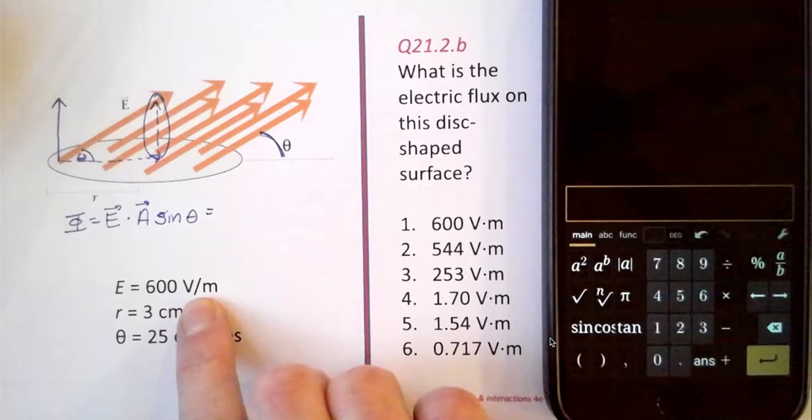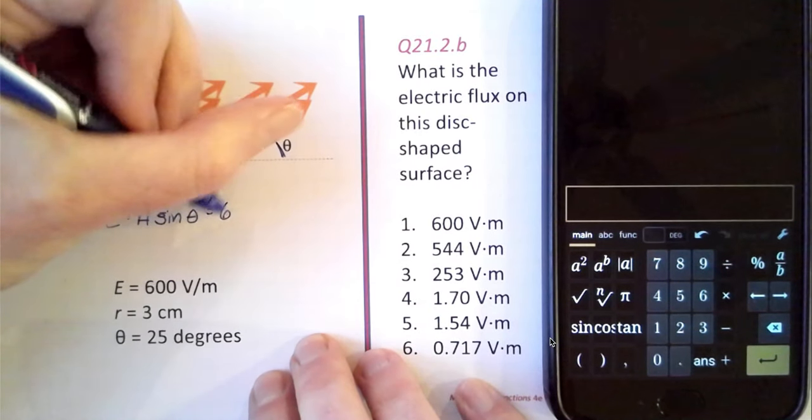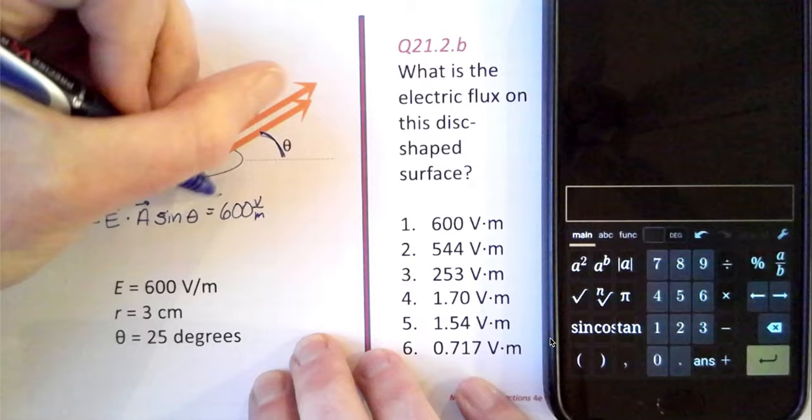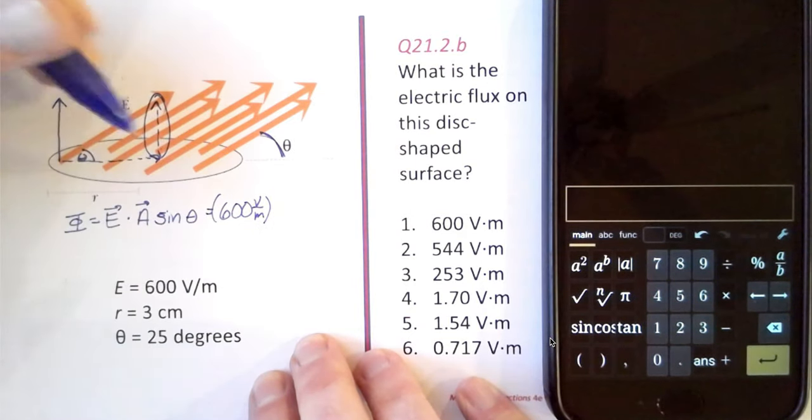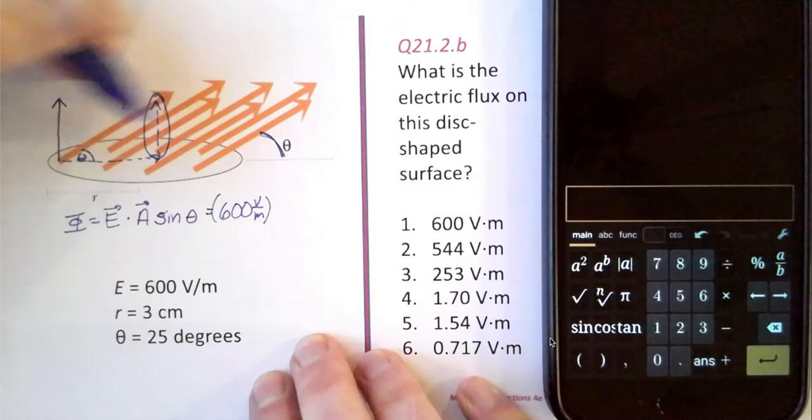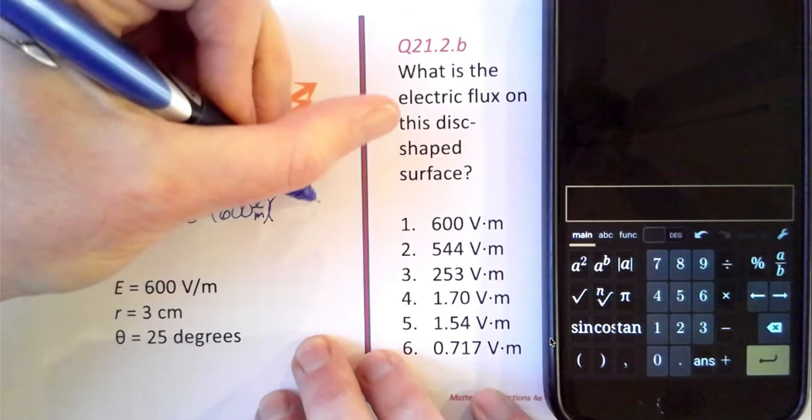So the magnitude of the electric field is 600 volts per meter. The area of the disc is pi r squared.